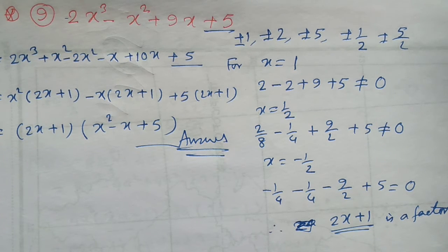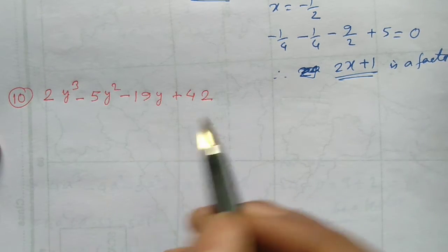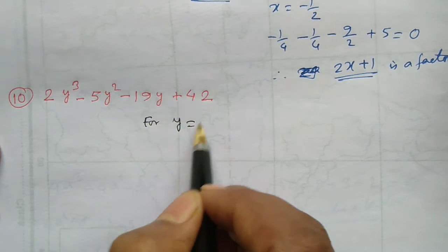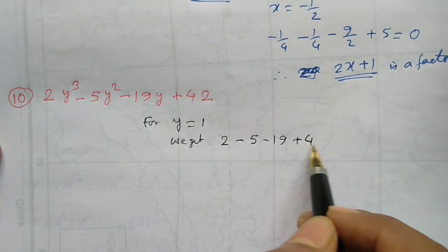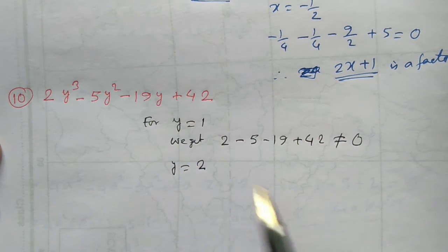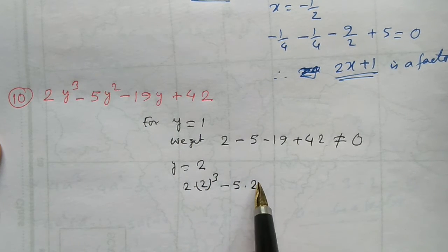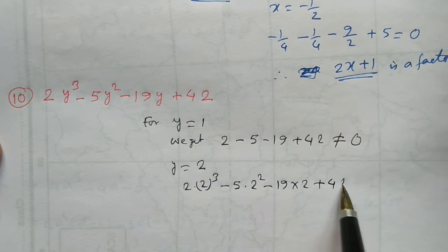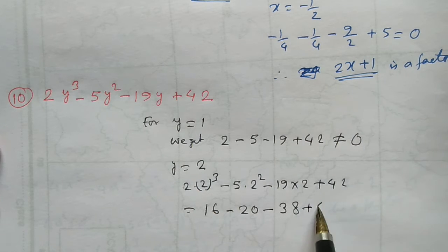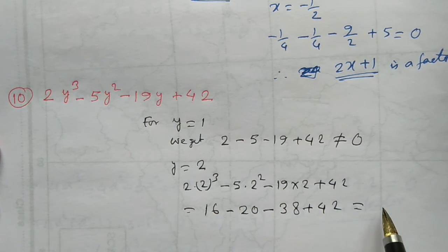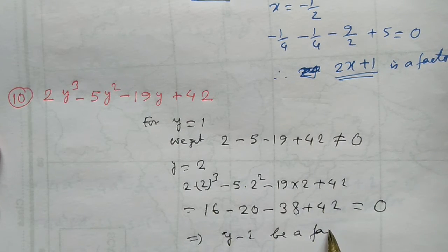The next problem is 2y cube minus 5y squared minus 19y plus 42. For y equals to 1, we get 2 minus 5 minus 19 plus 42. For y equals to 2, we get 2 into 2 cubed minus 5 into 2 squared minus 19 into 2 plus 42, which equals 16 minus 20 minus 38 plus 42, and this equals 0.